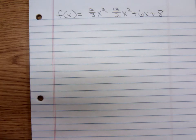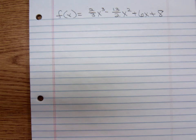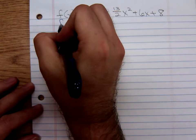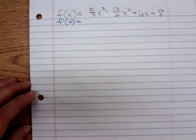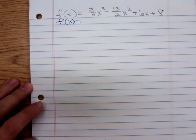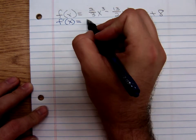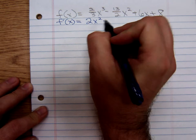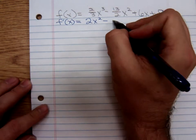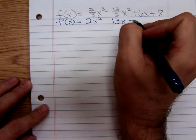And we need to find the derivative. This is going to work out pretty nicely despite the fractions. The derivative of a two-thirds x cubed is - when you bring down that three, it cancels that three there - just 2x squared minus 13x plus 6.